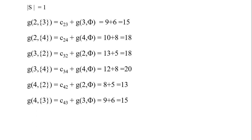g(3, {2}) gives 18 and g(3, {4}) gives 20. Currently at city four, you need to visit city two: c(4,2) plus g(2, ∅) is 8 plus 5, giving 13. And g(4, {3}) equals c(4,3) plus g(3, ∅), which gives 15. These are all the values where you visit exactly one city — all possible subproblems solved because they are required to find the final optimal solution.